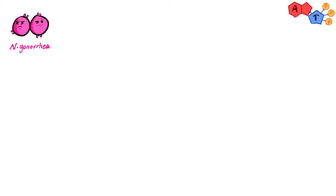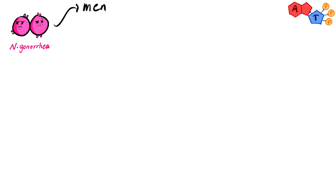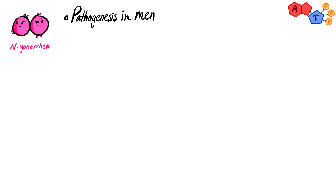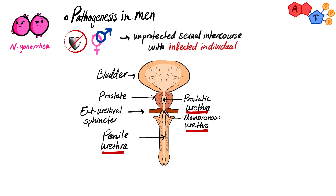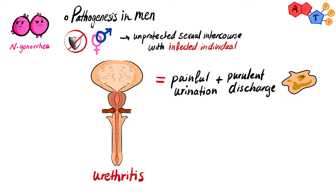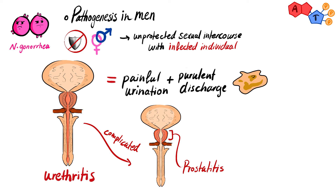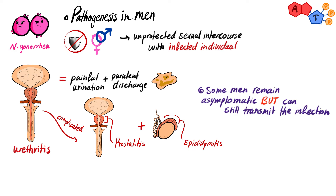Now let's focus on Neisseria gonorrhoeae. Remember that Neisseria gonorrhoeae does not ferment maltose and does not have a polysaccharide capsule like Neisseria meningitidis. Neisseria gonorrhoeae can affect both men and women and result in gonorrhea infection. In men, it is acquired through unprotected sexual intercourse with an infected individual. It will first damage the urethra and cause urethritis, presenting with painful urination and purulent discharge. The infection can get complicated and cause prostatitis and epididymitis. Although some men remain asymptomatic, they can still pass the infection to other sexual partners.